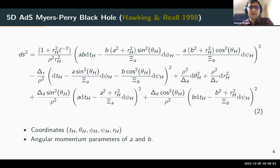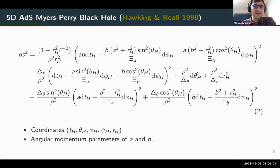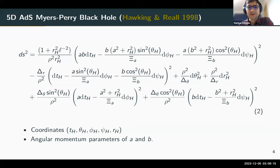More than 20 years ago, Hawking and Reall found the first rotating AdS black hole solution in dimensions greater than four. You can see the explicit metric form. The important thing is to look at the two parameters a and b — these are the two spin parameters that characterize how fast the black hole is spinning.